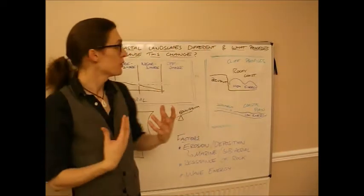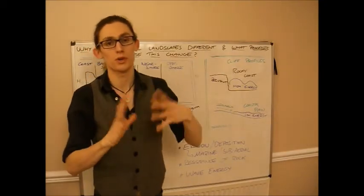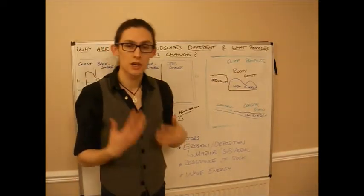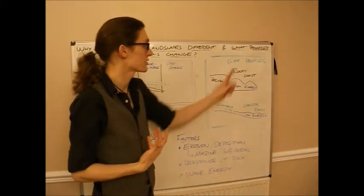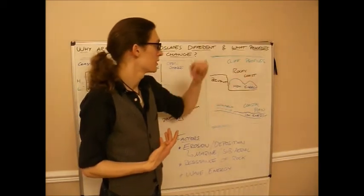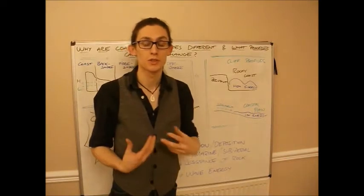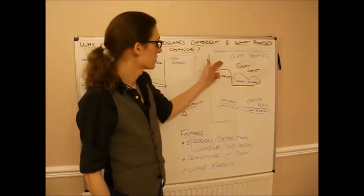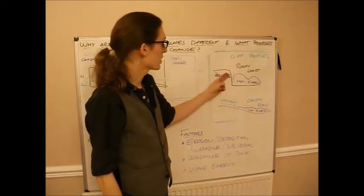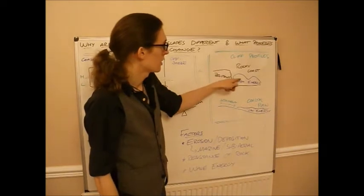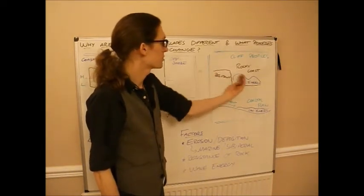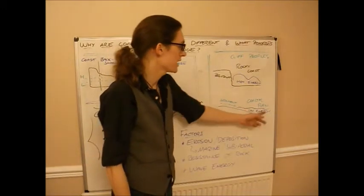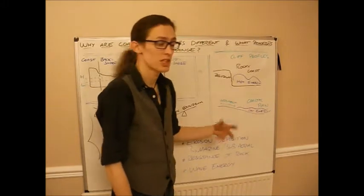Now we're going to come across two different main types of coastline: rocky coasts and coastal plains. These are very different, particularly in their profiles. You need to know the term cliff profile — that is, the shape of the coast. On the rocky coast, you've got resistant rocks and high energy waves. What's happening is these waves are eroding against the cliffs and creating very angular shapes. On the coastal plain, you tend to have low energy waves, so it tends to be more depositional.